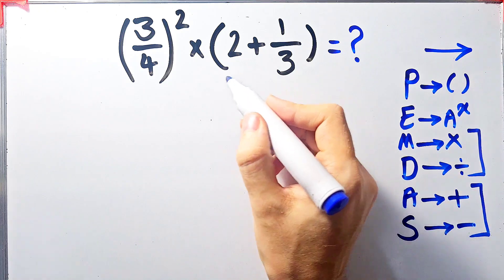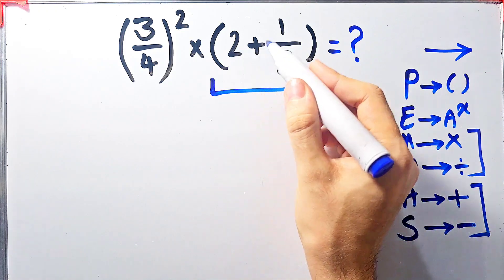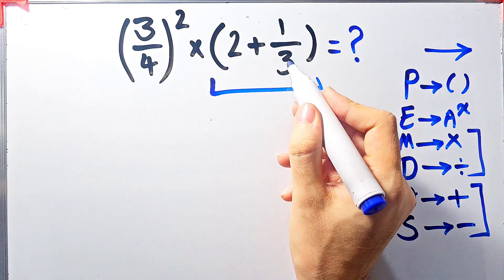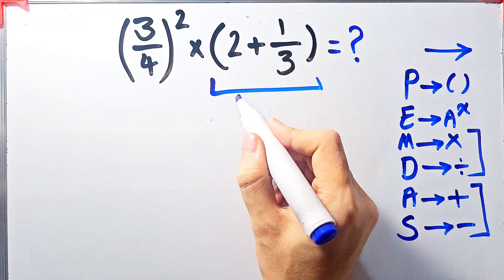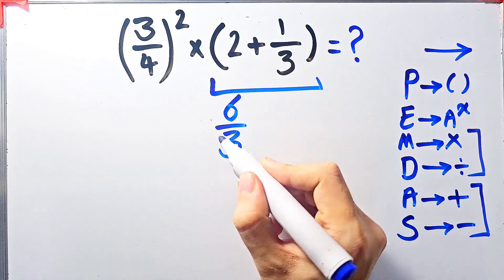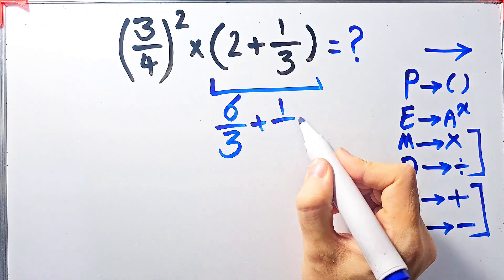According to the PEMDAS rule, first we simplify these parentheses: 2 plus 1 over 3. Since the denominator of this fraction is 3, we can write 2 as 6 over 3. Now we have 6 over 3 plus 1 over 3.